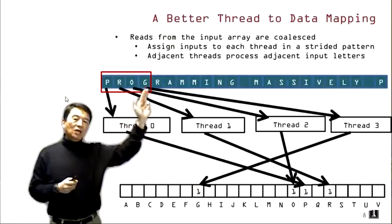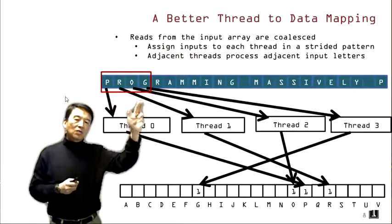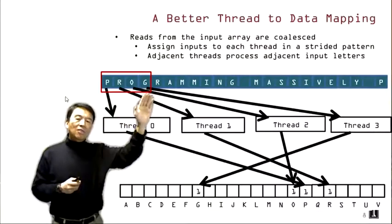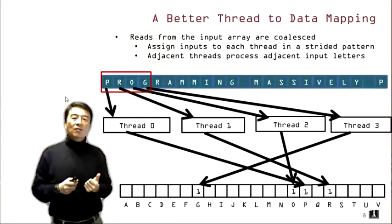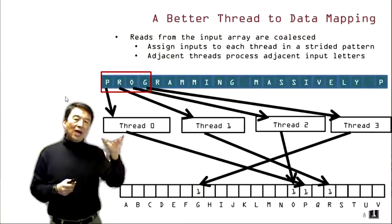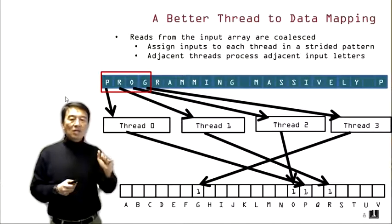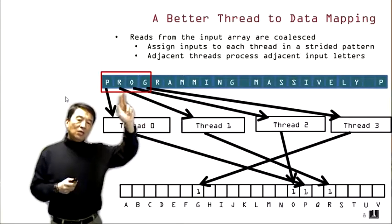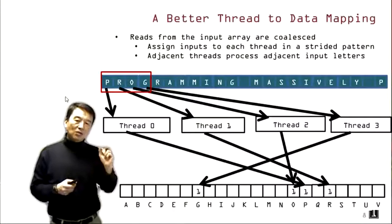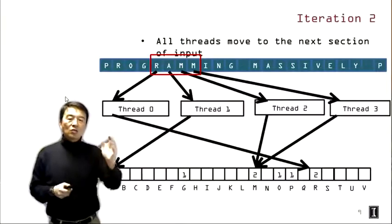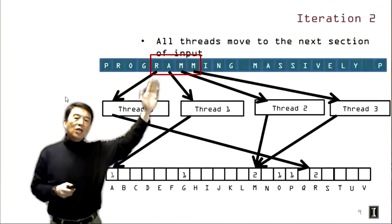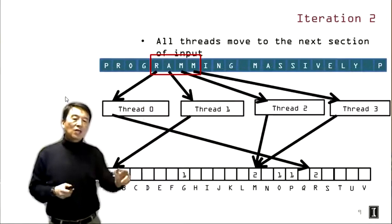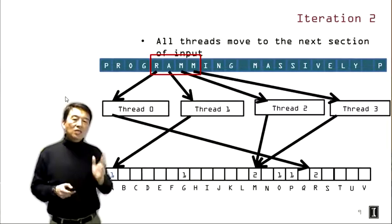The better approach has all threads reading consecutive locations in the first iteration — thread zero reads location zero, thread one reads location one — exactly the same pattern as vector addition thread-to-data mapping. Because adjacent threads are reading adjacent input locations, these threads make coalesced memory accesses. After this iteration, all threads advance to the second section and continue reading consecutive locations, maintaining coalesced access throughout.